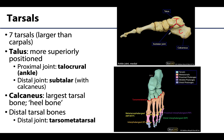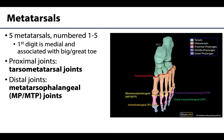The four distal tarsal bones articulate with the metatarsals at the tarsometatarsal joints. There are five metatarsals, similar to the metacarpals of the hand, but a key difference is that the first metatarsal is the medial-most metatarsal, rather than the lateral-most as with the first metacarpal. The first metatarsal is associated with the big or great toe, continuing in sequence medial to lateral as the second, third, fourth, and fifth metatarsals.